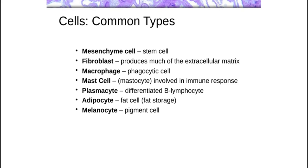Now let's move on to cells. This is not an exhaustive list of cell types found within connective tissues — just the first few to become familiar with. When dealing with immature embryonic tissues, we're dealing with cells called mesenchyme cells, which form mesenchyme tissues. These are stem cells with very little cytoplasm and fairly pale nuclei — pale because they don't yet know which genes to turn off, as they could become any number of other cell types.